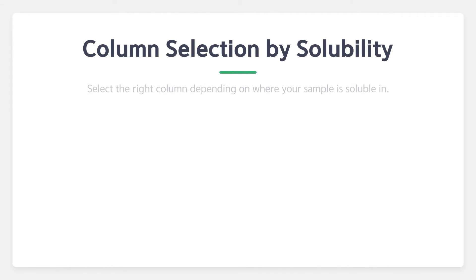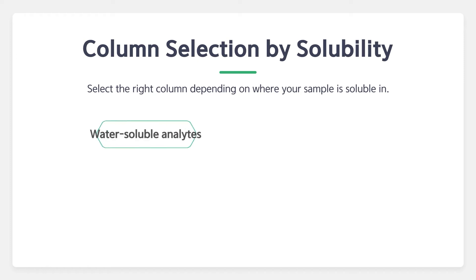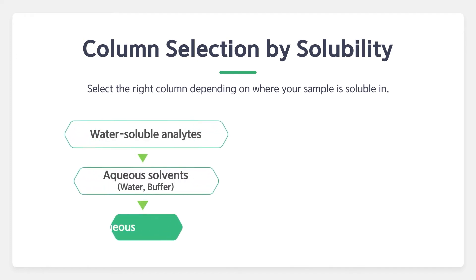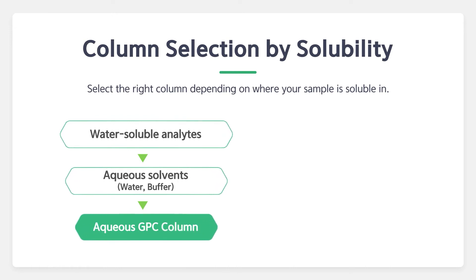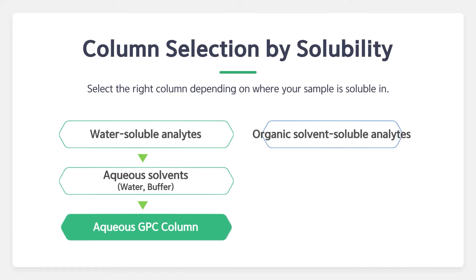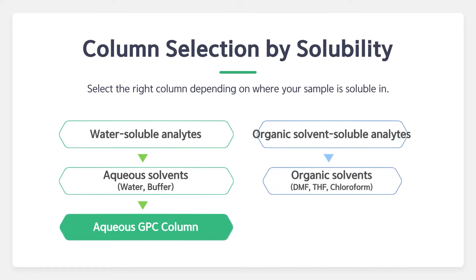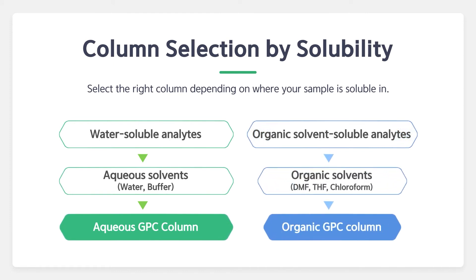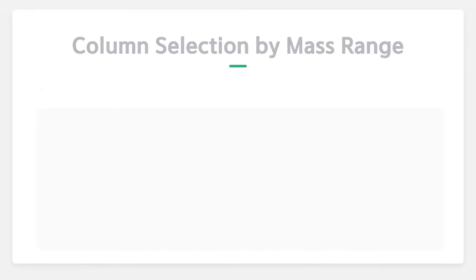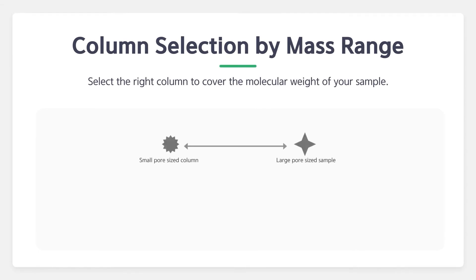In order to choose the right GPC column, you should first consider the solvent type used to dissolve your sample. If your sample is soluble in water or a water-based solvent, select an aqueous GPC column and use aqueous solvents like water with buffer as the mobile phase. If your sample is soluble in an organic solvent like DMF, THF, or chloroform, an organic GPC column is the right choice and organic solvents are suitable as the mobile phase.